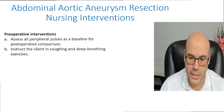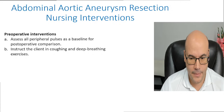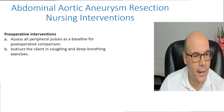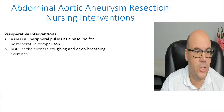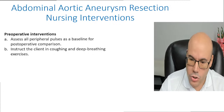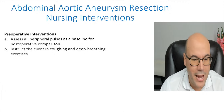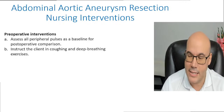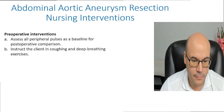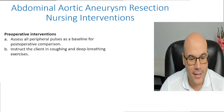Another pre-op nursing action is to instruct the client on cough and deep breathing exercises. Usually we see this to prevent complications from immobility like pneumonia and atelectasis, but it is also a good pre-op intervention. We want to increase the return of blood to the heart through the inferior vena cava, which is important to maintain normal organ perfusion before surgery — because perfusion may already be affected by the aneurysm.